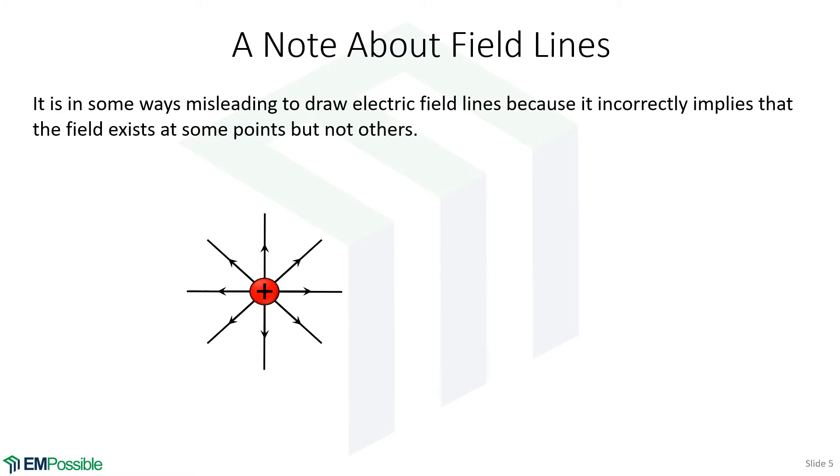Now some notes on these field lines. We always draw field lines around charges, and in some ways, it's unfortunate and also very misleading. Because when we draw field lines, what this seems to imply is that somehow there's an electric field here, but not over here. And it makes us think that the field is somehow discrete or connected in these lines and stringy in some sense. And it's not that at all. So this is a wrong picture. I think the concept of electric field lines takes us down this path, and we're visualizing the electric fields incorrectly from the very beginning.